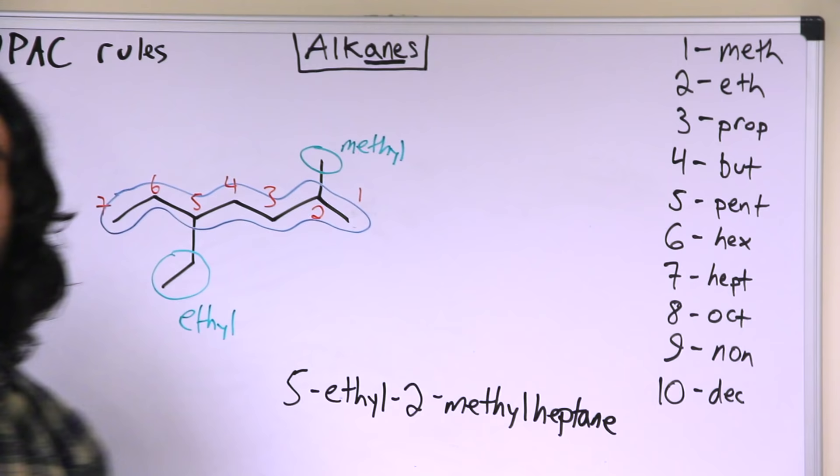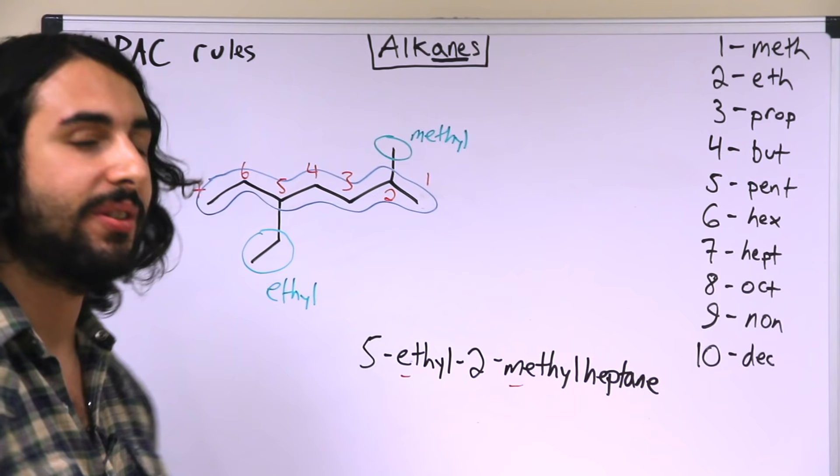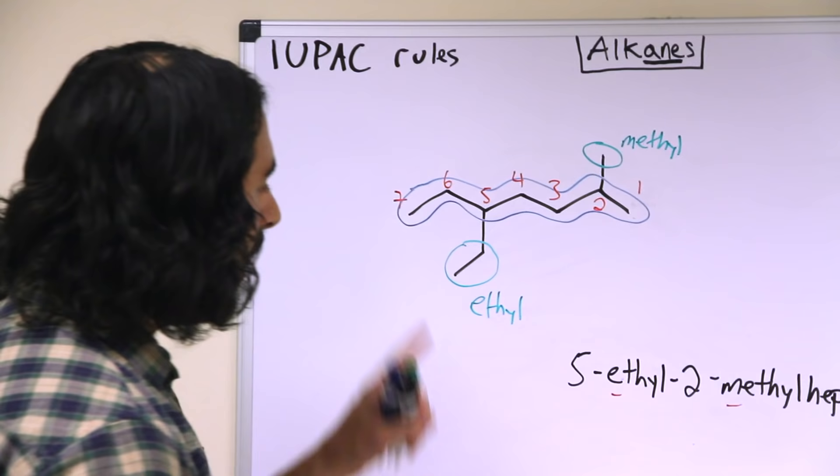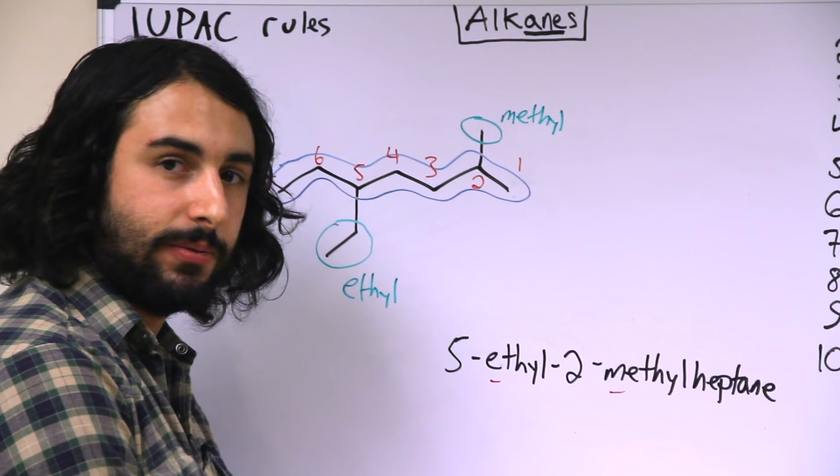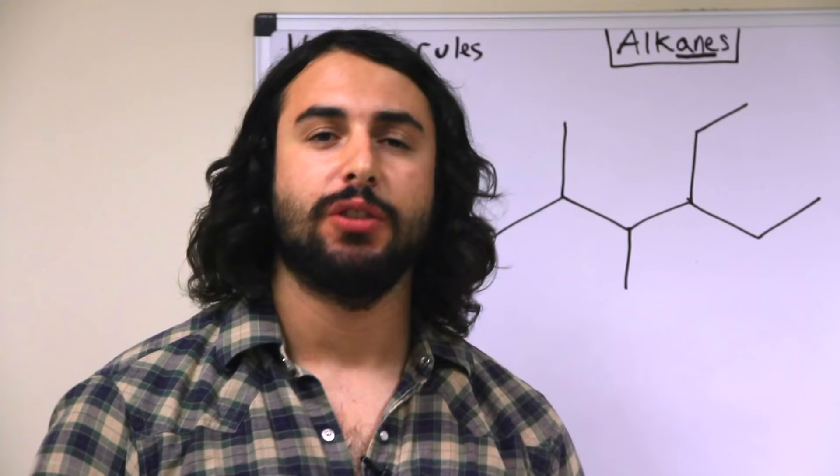So once again this is a completely arbitrary rule, but if we all follow it we will be able to come up with the same name for the molecule. E before M, ethyl before methyl. Just as a point of convention, in between words and numbers we will have a hyphen, and later we will see that in between numbers there is a comma.